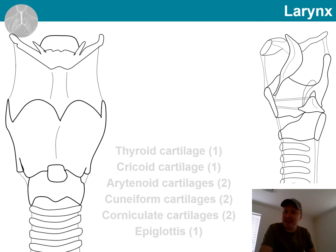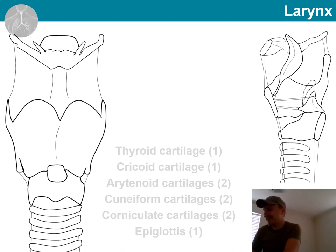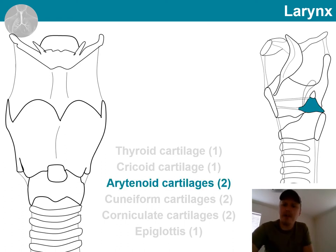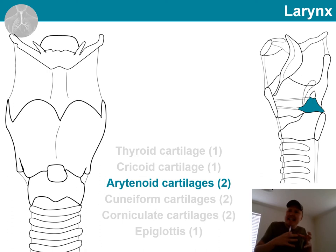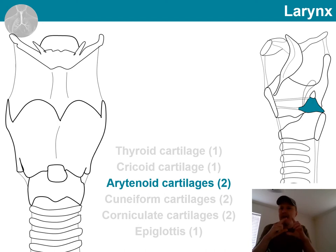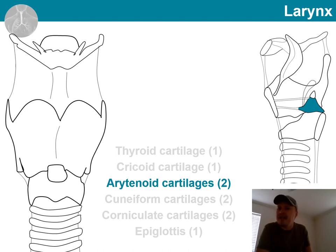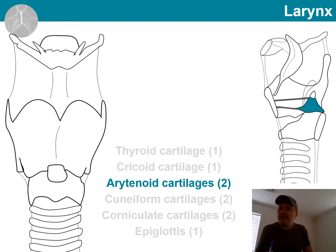Let's go through the rest of the cartilage parts. There are two arytenoids, one on each side. They are located inside the thyroid cartilage, so only visible on the cross-section view. They are triangular cartilage structures. The reason why they are so important is that as muscles control their movement, they manipulate the tension of the vocal cords.